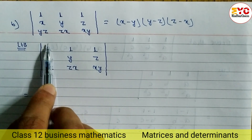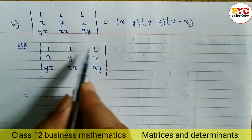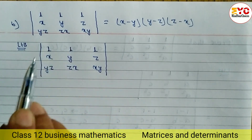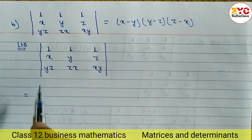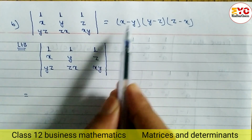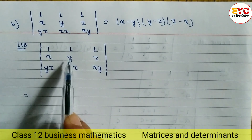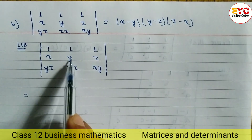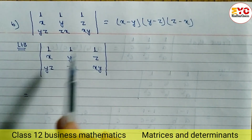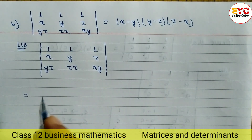So when you subtract the first column and second column, we get 1 minus 1, which gives 0. And when you subtract the second column and third column, here also we will get 0. Anyhow, we have to make two elements 0 either in rows or in columns. We also have to prove x minus y, so from the RHS you can find out which rows or columns we have to subtract.